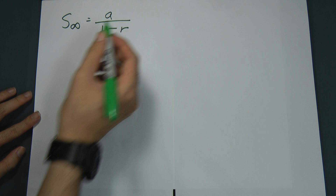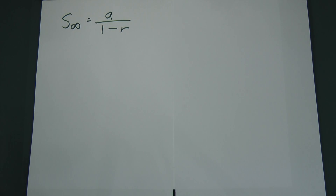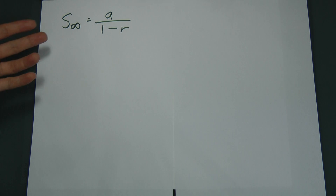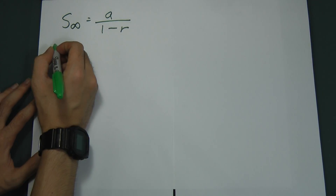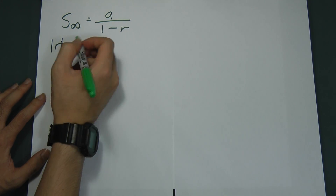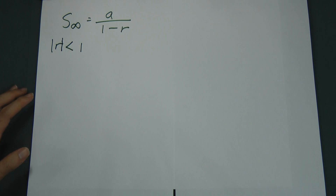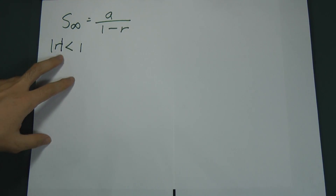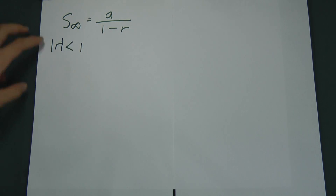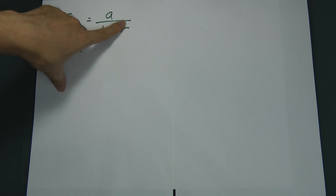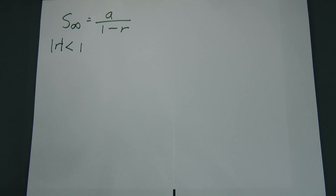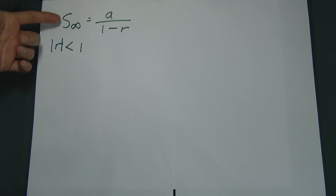There are a few conditions in order to use sum of infinity. In most past year questions, the question will straight away tell you to find the sum of infinity, so you just apply the formula. Of course, r for sum of infinity must always be smaller than 1. This formula appears in paper 2, where sometimes it will not hint you to use this formula, so you have to know when to use it.